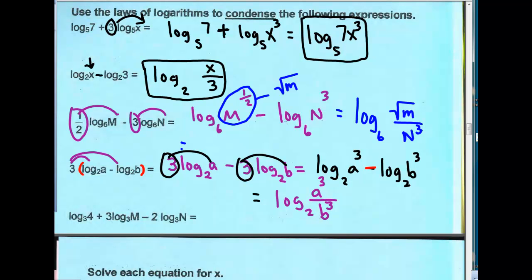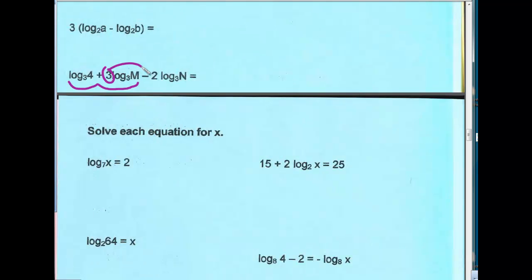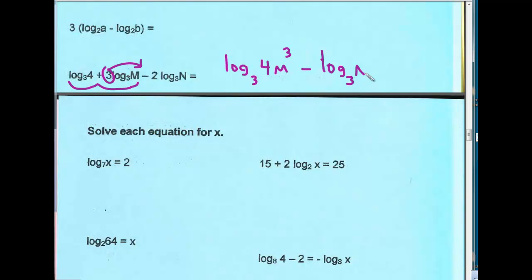Last example: first, I notice that the 3 is going to move up as an exponent and I have multiplication. So the top piece becomes log base 3 of 4m cubed, and the second one becomes log base 3 of n squared. Now I still have a minus sign, so this becomes log base 3 of 4m cubed divided by n squared.